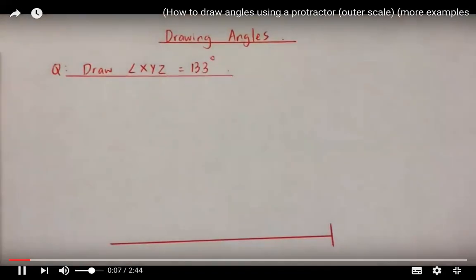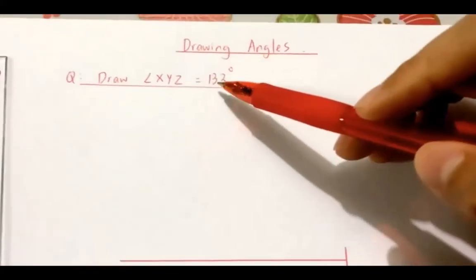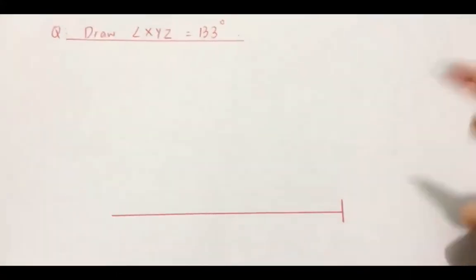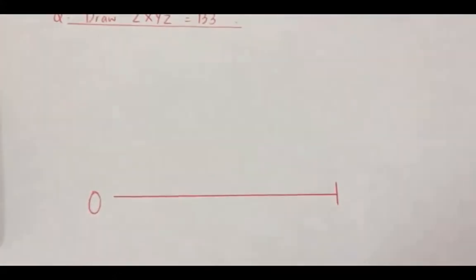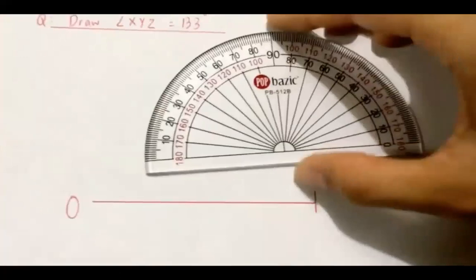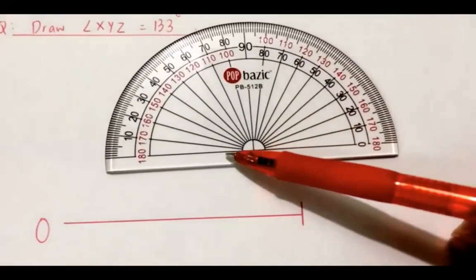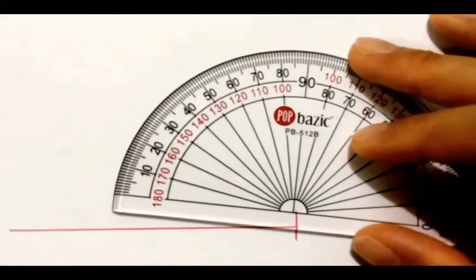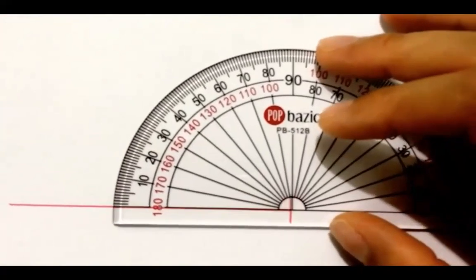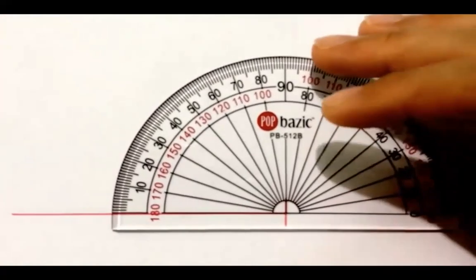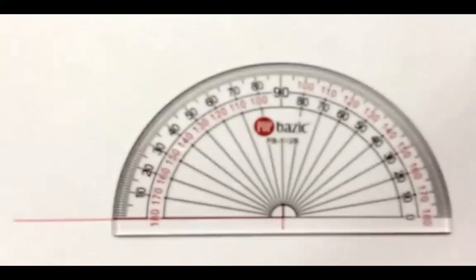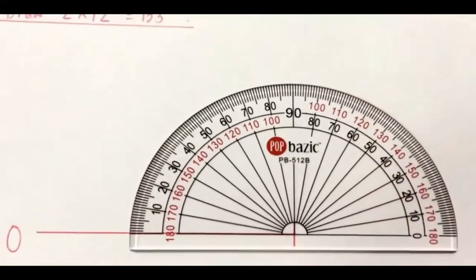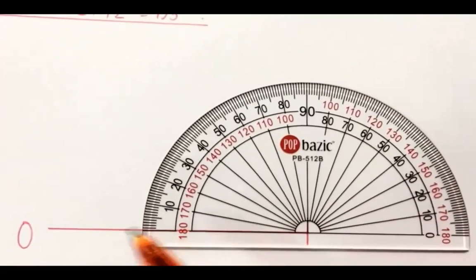In another video: draw angle XYZ that is 133 degrees. Start with a straight ray and label the starting point as zero. Place the protractor on the line so that the black baseline aligns with the red ray and the center point aligns with the vertex point.